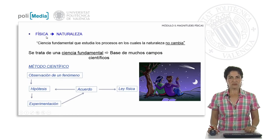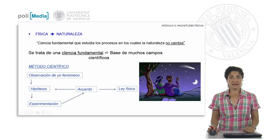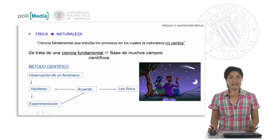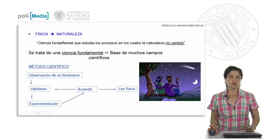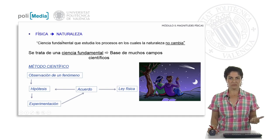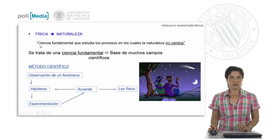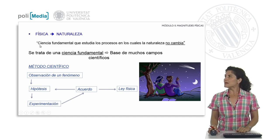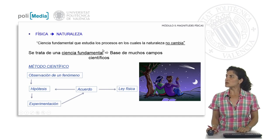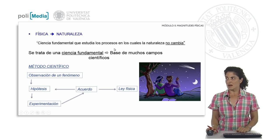What do we understand by physics? In general, the science of physics is a fundamental science that is the basis of many scientific fields, and it is concerned with explaining everything that happens in nature around us. A quite accurate definition we could take is that of the Spanish physicist Julio Palacios, who tells us that physics is the fundamental science that studies the processes in which nature does not change.